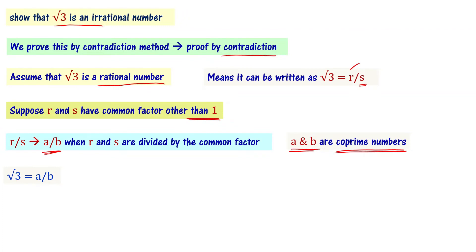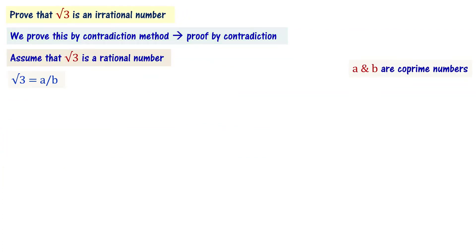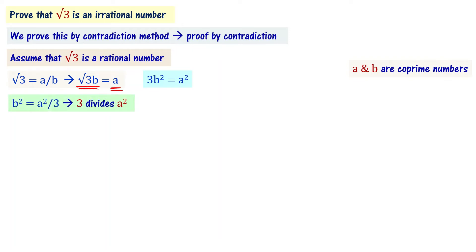Now apply square on both sides of the equation. Root 3 times b equals a. Squaring both sides: 3 times b squared equals a squared. So 3b² = a², which means 3 divides a squared.